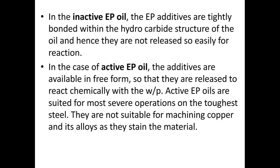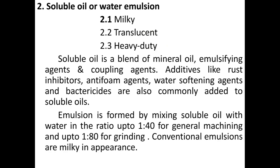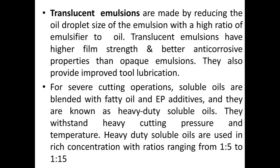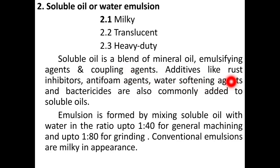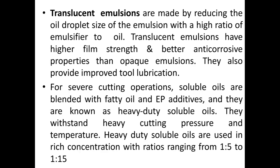Soluble oil, or water emulsion, has three types: milky, translucent, and heavy cutting oil. Soluble oil is a blend of mineral oil, emulsifying agents, and coupling agents. Additives like rust inhibitors, antifoam agents, water softening agents, and bactericides are also commonly added. Emulsion is formed by mixing soluble oil with water in a ratio up to 1:40 for general machining and up to 1:80 for grinding. Conventional emulsions are milky in appearance; translucent emulsions are made by reducing the droplet size of the oil with a higher ratio of emulsifier to oil, and have higher film strength and better anti-corrosion properties.